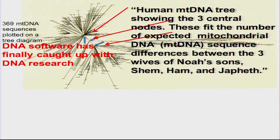The program was commanded to group them by similarity. Here's what happened: they kept docking at one of three different nodes. That's what the three blue arrows, highlighted by the three red arrows, is showing.